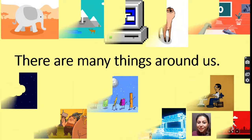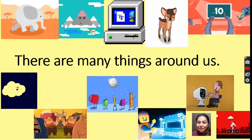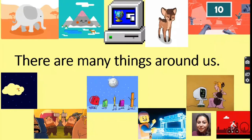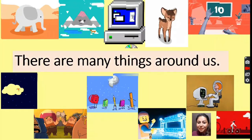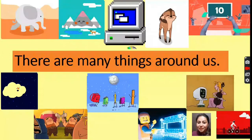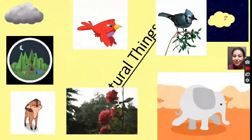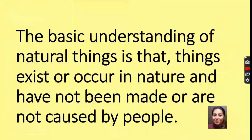There are many things around us. As you all can see on your screens, there are many things around us. Some are natural things and some are man-made things. The basic understanding of natural things is that things exist or occur in nature and have not been made or caused by people.